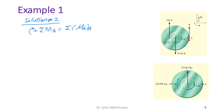The 100 N force acts at a distance of 0.7 m, so the left-hand side is: 100 × 0.7 − 78.48 × 0.5.